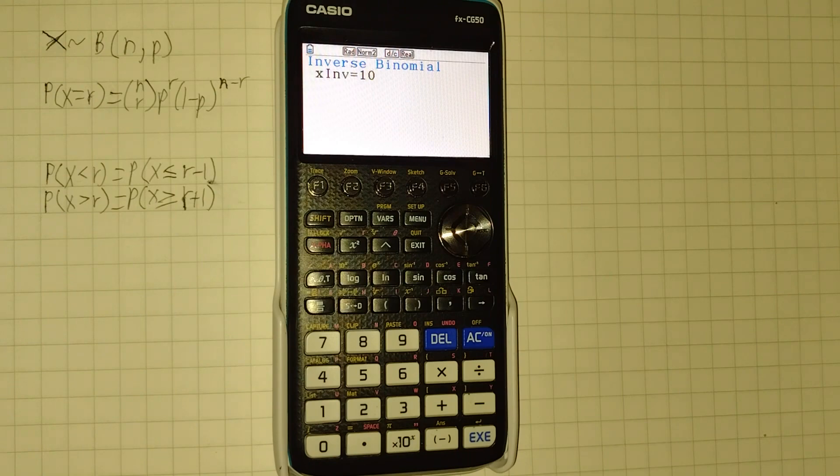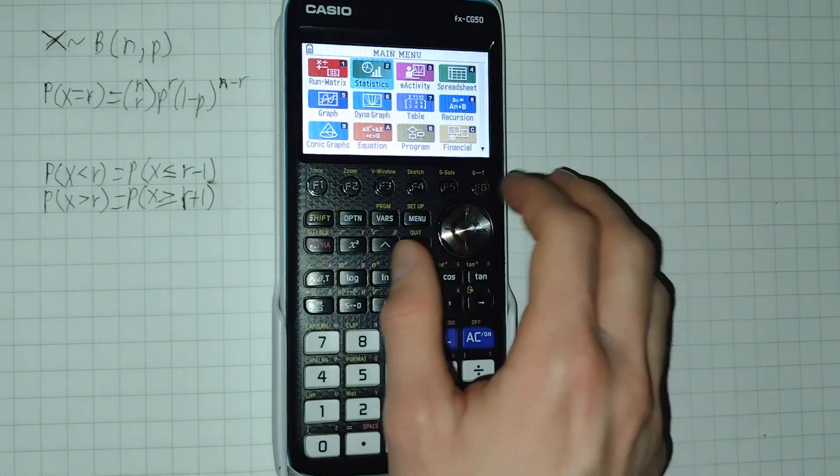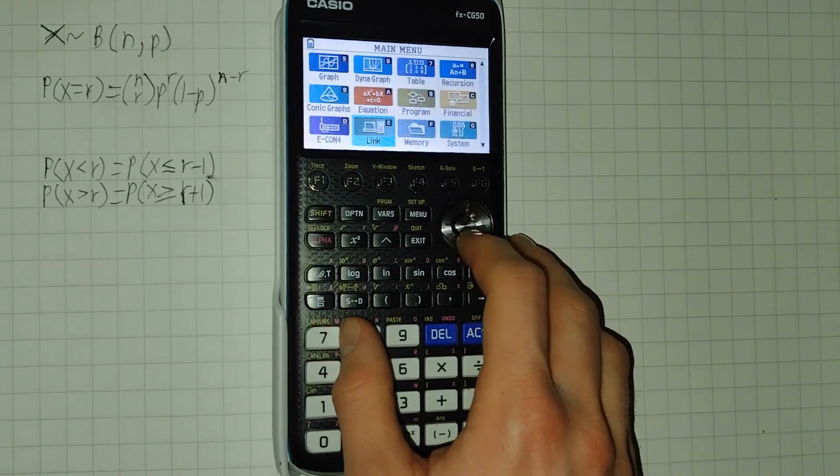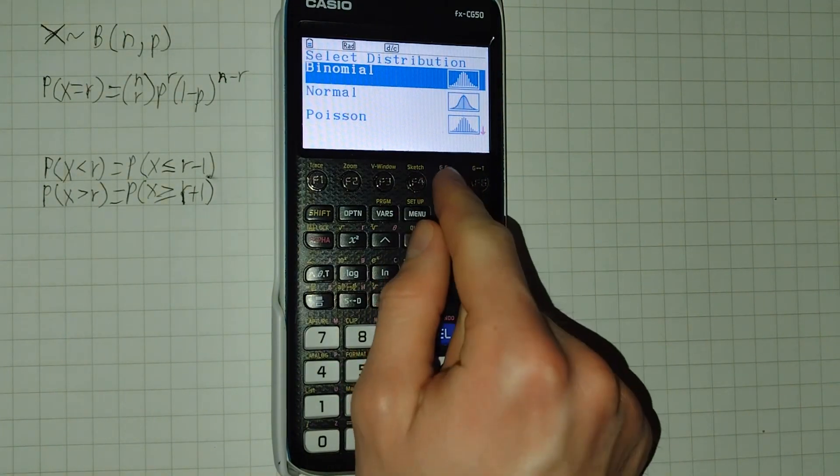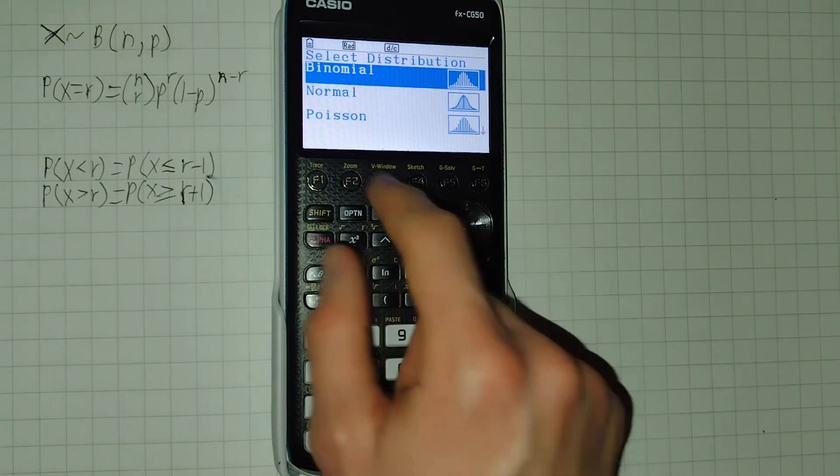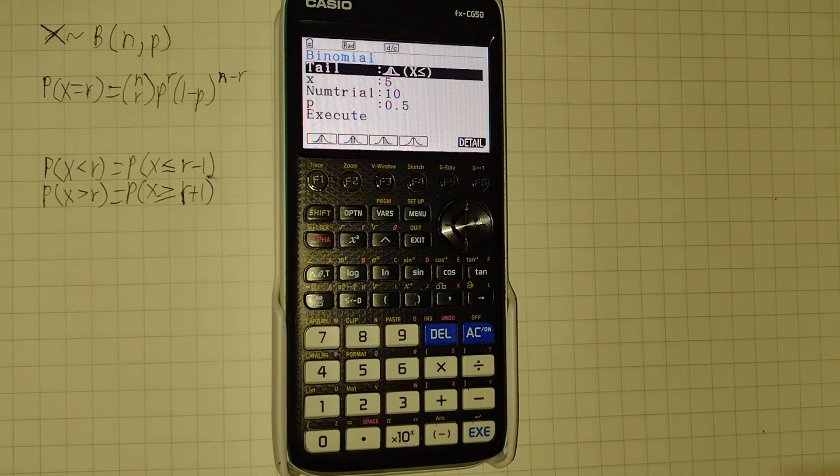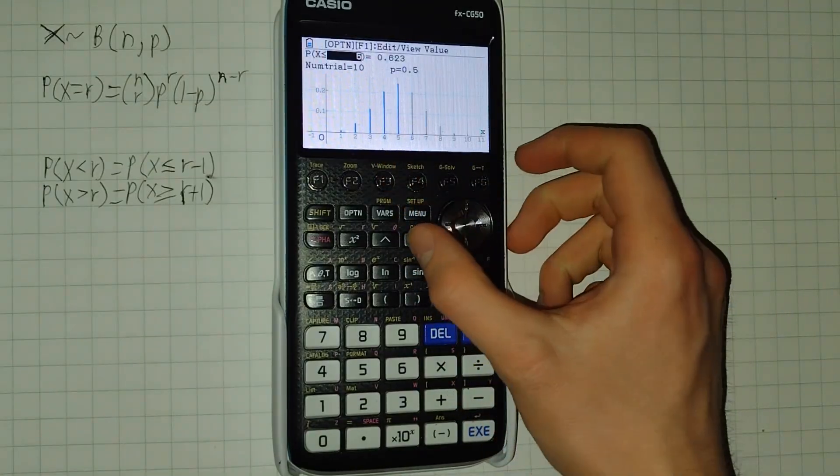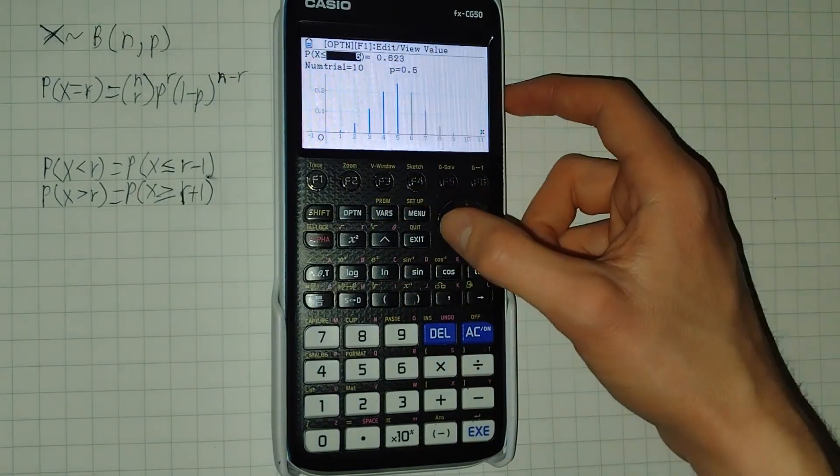So the final thing I want to show off is the special distributions mode. So if we click menu, to take us back to the main menu, and then we go all the way down and select distribution. We get this mode. And here we can select a number of different distributions, although we want binomial, so we'll click execute for binomial. And this lets us get a visual look at the distribution, and it shows us clearly what values we're considering, what probabilities we're considering, and gives us our value.